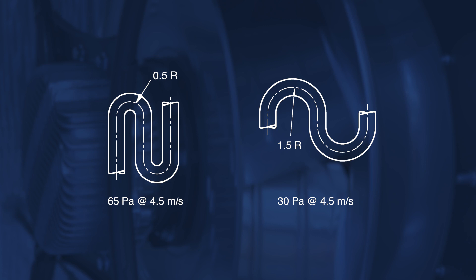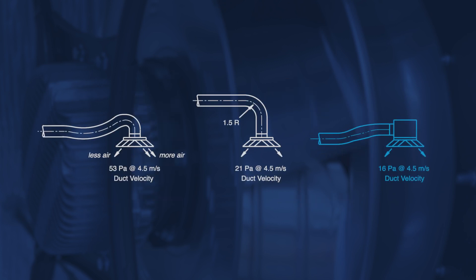Avoid S-bends, as these can generate more than double the pressure loss of a 180 degree bend — in fact, about 2.5 times the pressure loss. Side entry diffuser boxes generally have a much lower pressure loss than top entry diffuser boxes.